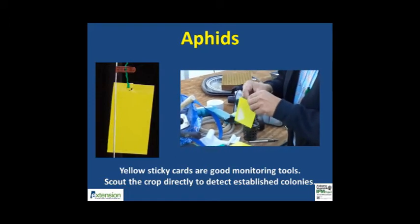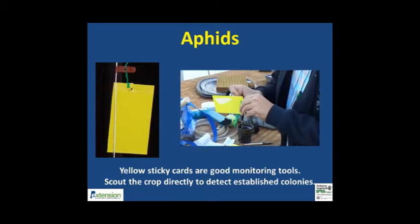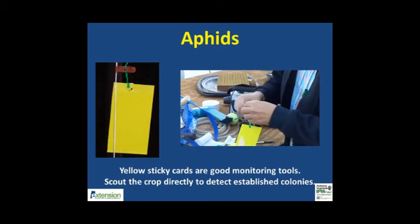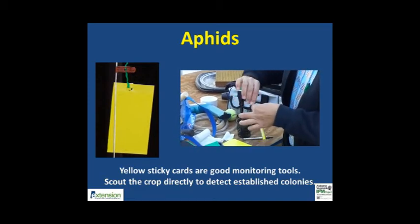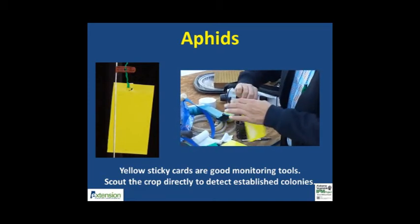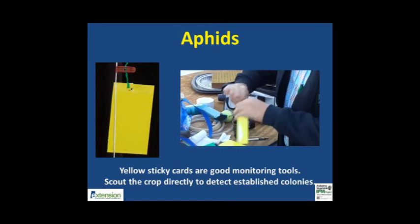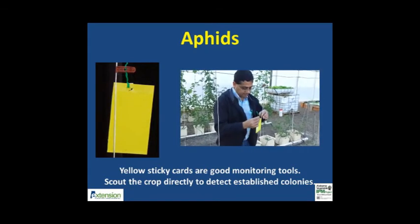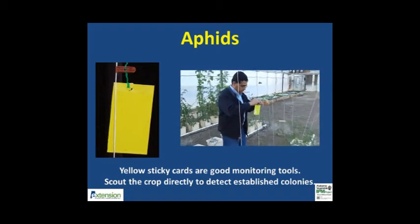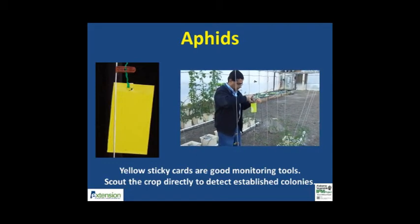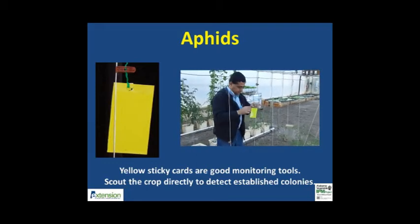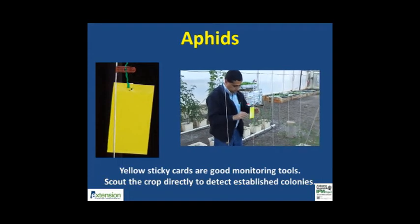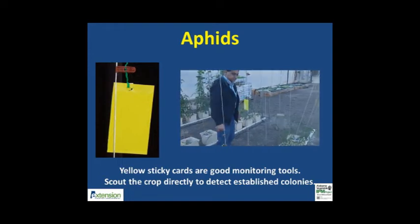Yellow sticky traps also capture insect pests like fungus gnats, whiteflies, thrips, and shore flies. Regularly check the traps and keep a record of your findings. Yellow sticky traps are sold by many vendors like Arbico Organics, Grow Organic, Johnny Seeds, Gimplers, and Amazon, just to name a few. Don't forget to place some sticky traps near doors and vents.